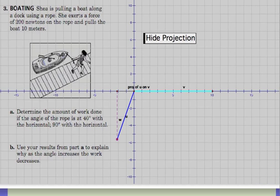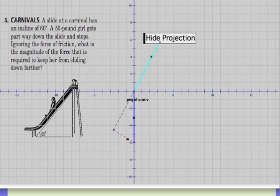Let's try another example. In this example, we have a girl on a slide with a 60 degree angle. She's 50 pounds and she's stuck in the middle. So we're wondering, what is the force causing her to not slide down?